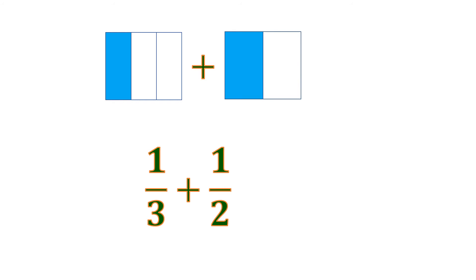So we have to do something to both fractions to make the same total number of boxes. For 1 third, we're going to take half of each slice. Since there are 3 slices, we add half of each piece, so it becomes 2 sixths — all 6 total. For 1 half, since we're adding it to 1 third, each piece of 1 half will be divided into 3, so from 1 half it becomes 3 sixths, which is the same as 1 half. Now they both have a total of 6 boxes, so they fit and we can combine them.